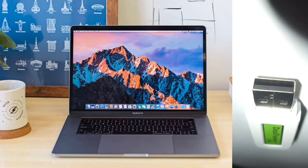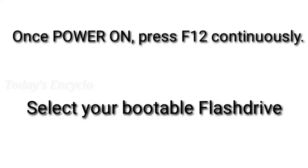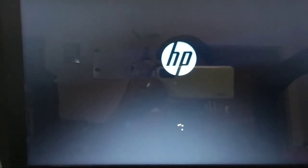Now insert the pen drive in your system where you need to install the OS. Once you power on your system, press F12 continuously to directly boot from the pen drive where the OS ISO image is stored. Once you press F12, all bootable devices will be shown and you can select your bootable pen drive. If your pen drive is not showing, you need to change the boot options in your BIOS - I will show that in the last section of this video. Now I pressed F12 and started the OS installation through my bootable pen drive.